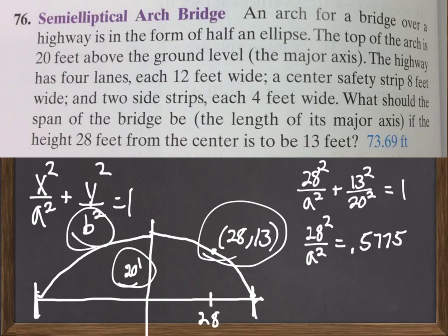And then, finally, now solve this equation for a. So, I can bring the a squared over, divide by that 0.5775, and then, I can take the square root of that answer. When I do that, I get a equals 36.85.